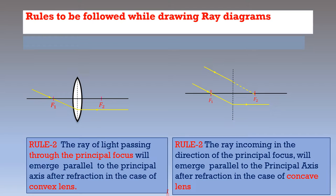In the case of a concave lens, if the incoming rays are passing through the focus, or they are falling on the concave lens in the direction of the focus — both are shown in the diagram — after refraction they emerge parallel to the principal axis, same as in the case of the convex lens.